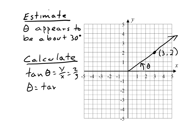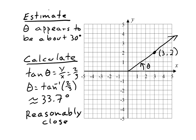This makes our angle the inverse tangent of 2 thirds. When using a calculator to find this value, make sure you have it in the correct mode for the angle measure you want, whether degrees or radians. I am using degrees. The inverse tangent of 2 thirds is 33.7 degrees. This agrees with our estimate, so it is probably correct.